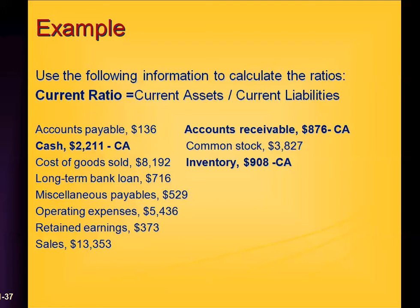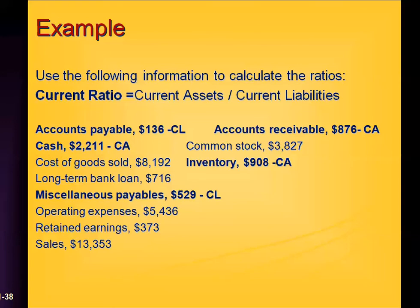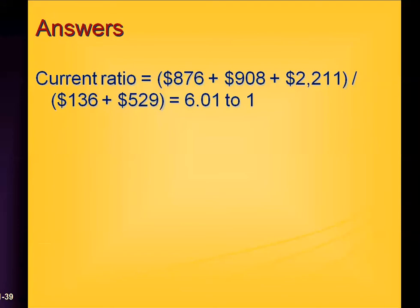Now let's identify the current liabilities — things you have to pay in 12 months or less. Accounts payable at 136 is a current liability, and miscellaneous payables is another current liability. A long-term bank loan is a liability but classified as long-term, not current. So the current ratio equals current assets of 876, 908, and 2,211 divided by current liabilities of 136 and 529, which equals 6.0121.